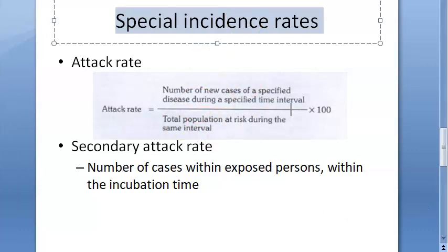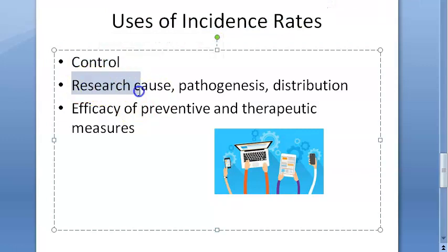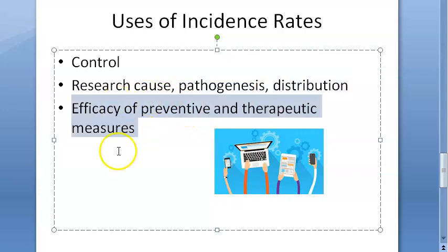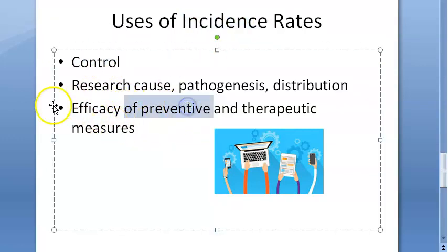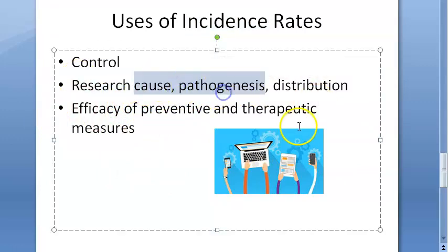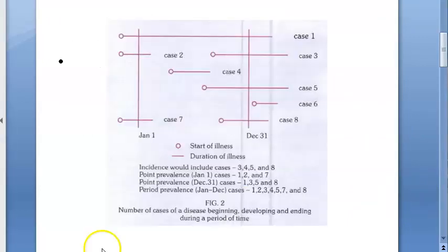Now let's look at the uses of incidence rates. You use these rates to control the disease, to research the cause, pathogenesis, and distribution of the disease, and to understand how to prevent it. For example, if you've created a national health program to bring incidences under control but rates are still rising, that means the program isn't working and you need to find the cause and pathogenesis to stop new cases from occurring.